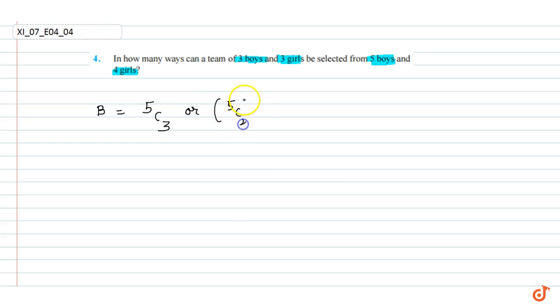Similarly for girls in the team, we have four girls and three girls in the team. So total number of ways for boys is 5C3, and for girls it's 4C3, where C means choose.